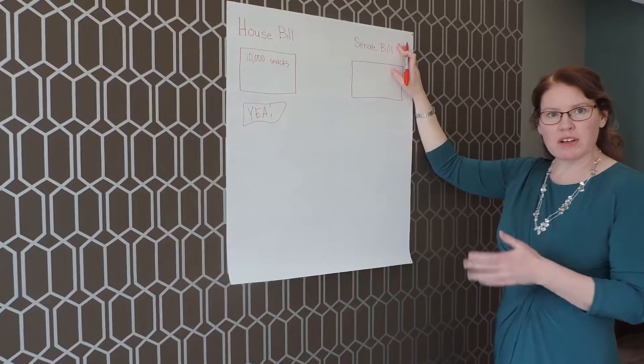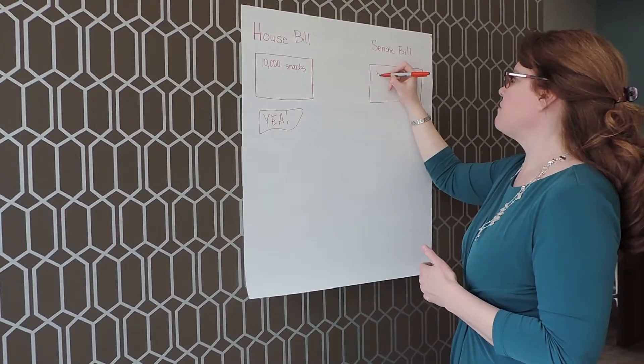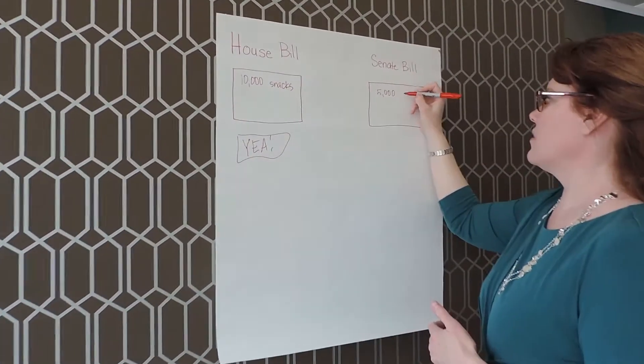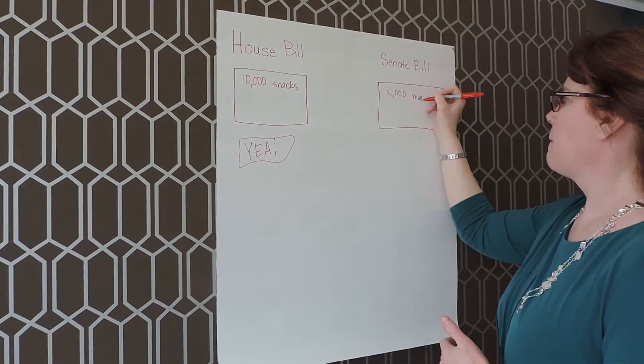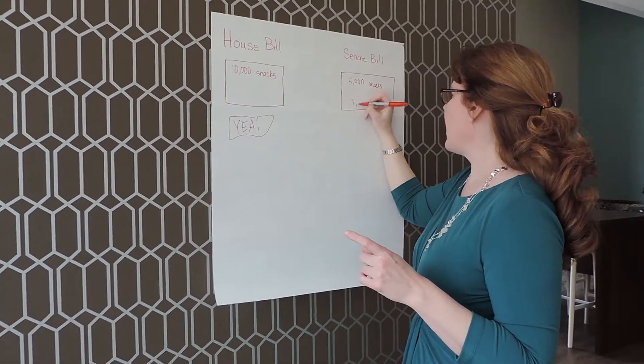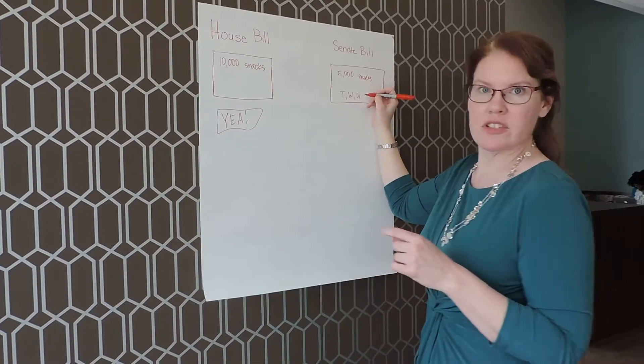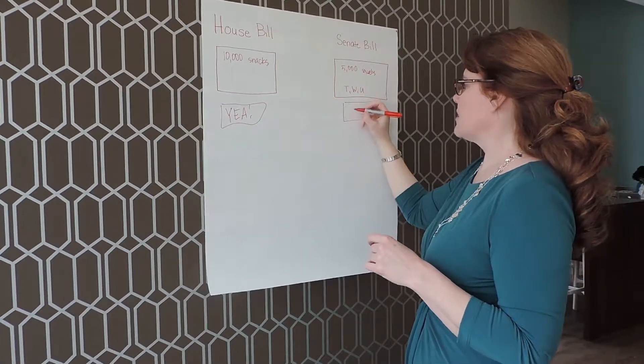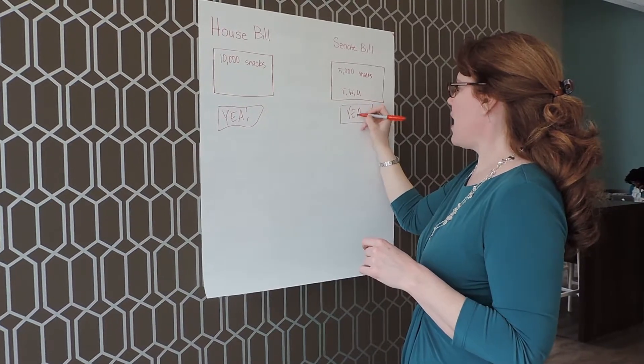Now the Senate, being more conservative, let's say they only want to spend $5,000 on snacks. And they only want to spend money on Tuesday, Wednesday, and Thursday. And this passes the Senate. Yay!